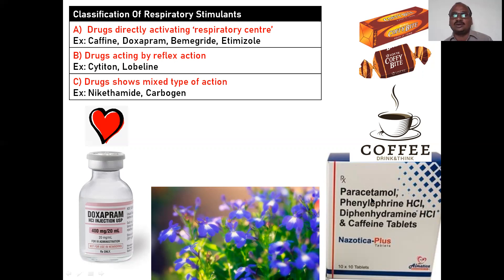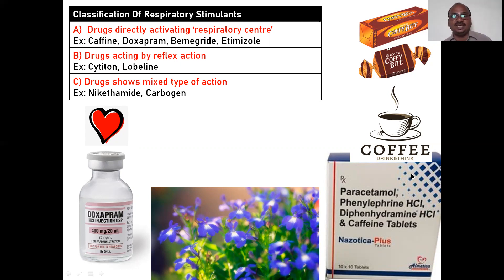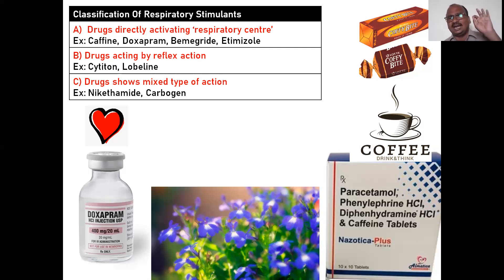Most students do not know that caffeine is available in the form of tablets. It is available — caffeine tablets. Bemegride, Etomidate, and Lobeline. Lobeline is a plant name — very important in Pharmacognosy subject. Lobeline has resuscitative value — it brings back life.